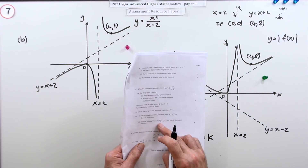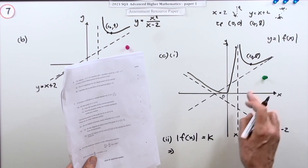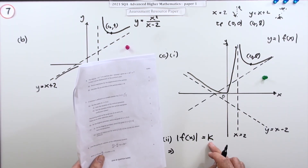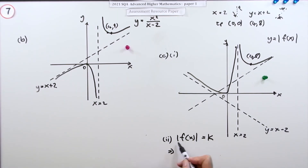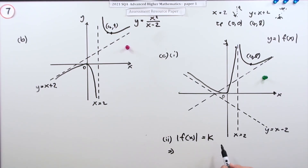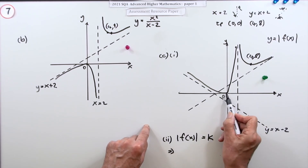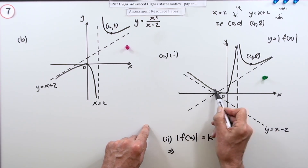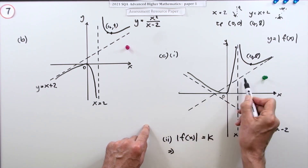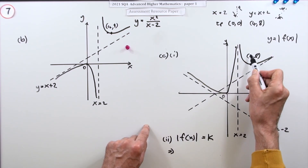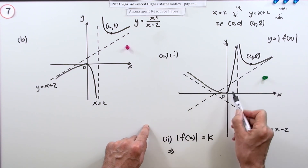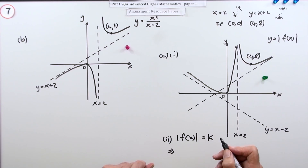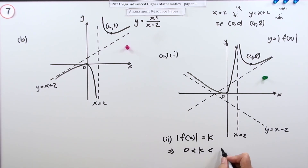Part c(ii): state the values of k for which the absolute value of f(x) equals k has exactly two distinct solutions. Two distinct solutions means a horizontal line y equals k cuts the graph at exactly two points. At the origin there's only one intersection; above zero we get two cuts until we hit the turning point at y equals 8, then three, then four. So k must lie strictly between 0 and 8.